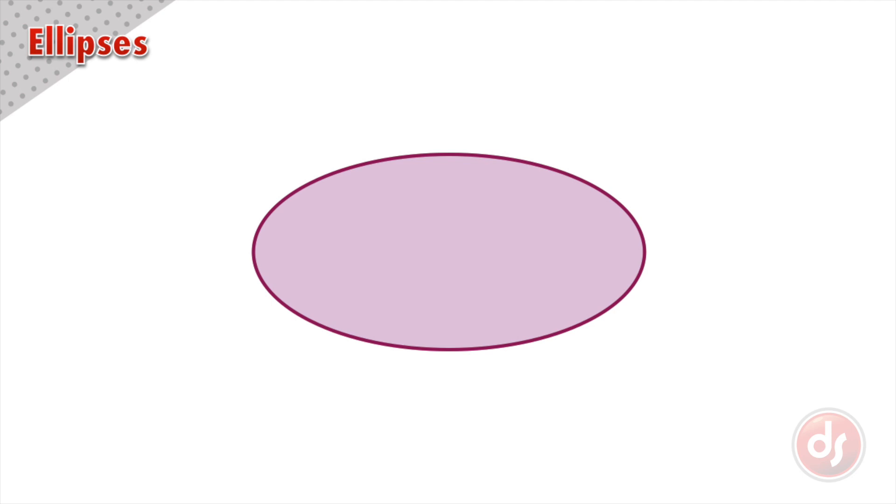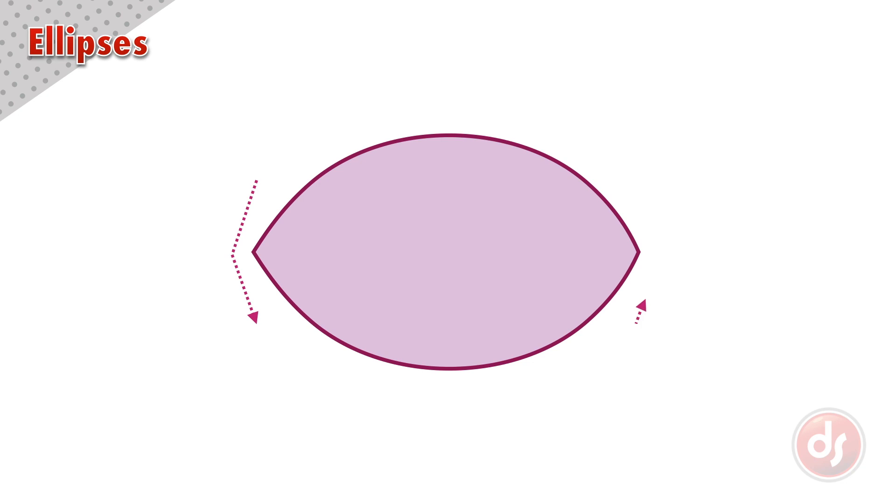In a perfect ellipse, the corners will always be rounded. They should never come to a point or be pinched.